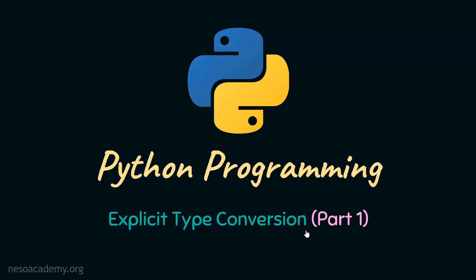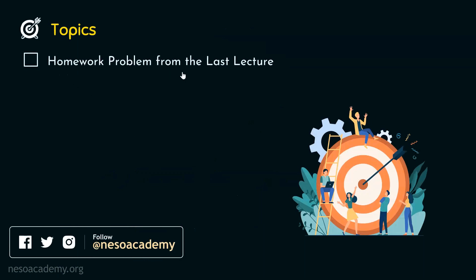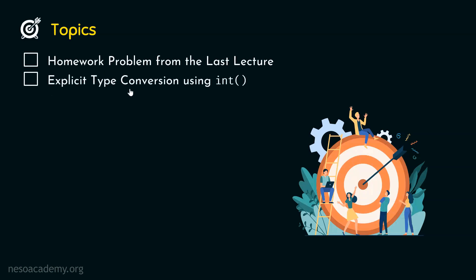Without any further delay, let's get started and see the topics of this presentation one by one. The first topic is the homework problem from the last lecture, which will set the ground for understanding explicit type conversion. Then we will understand explicit type conversion using int.